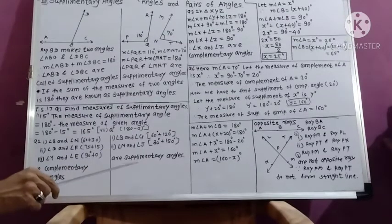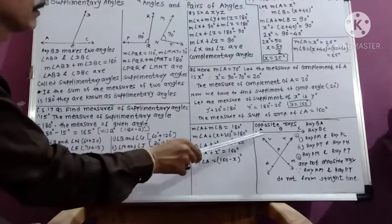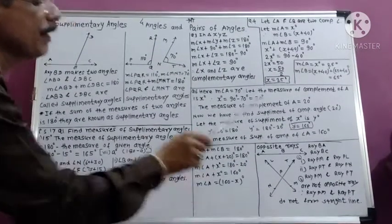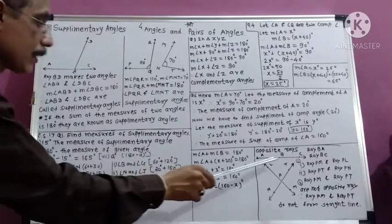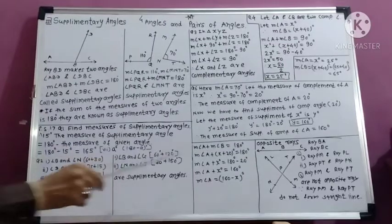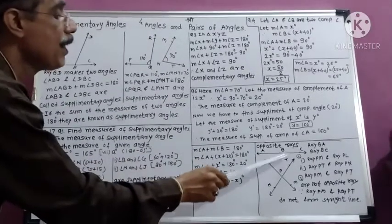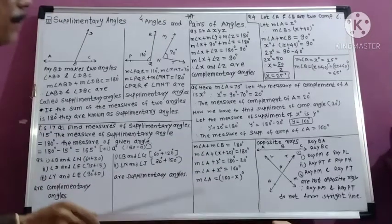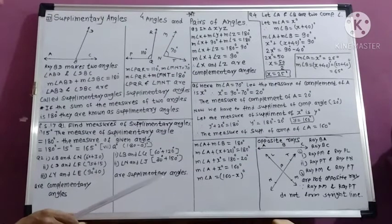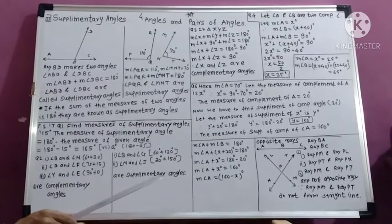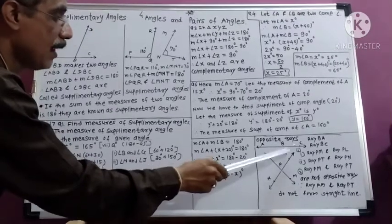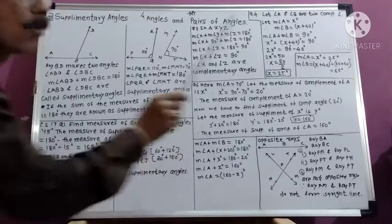The last example: measure of angle A and measure of angle B are supplementary angles, and measure of angle B is x plus 20 degrees. So measure of angle A plus (x plus 20) equals 180 degrees. Moving 20 to the other side: measure of angle A plus x equals 160 degrees, so measure of angle A equals 160 minus x degrees. Now, the concept of opposite rays: two rays that form a straight line with a common origin are called opposite rays.